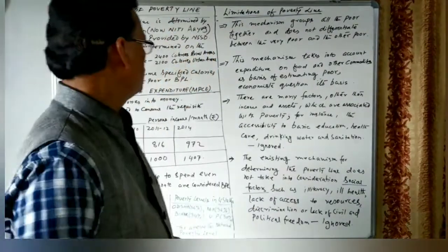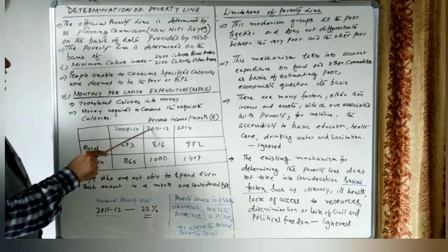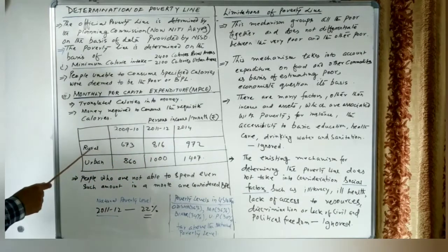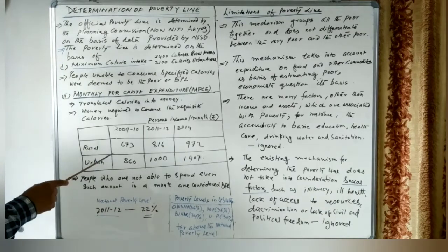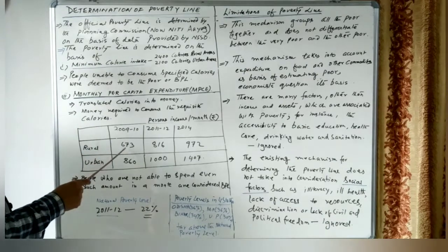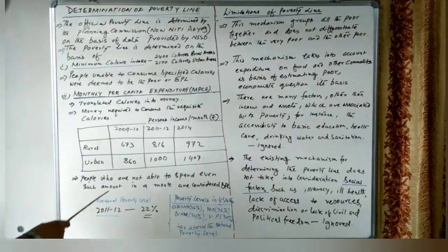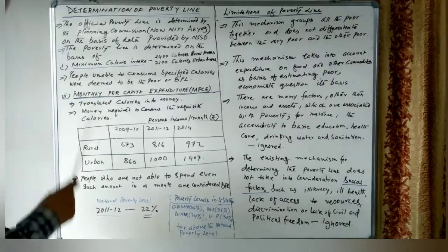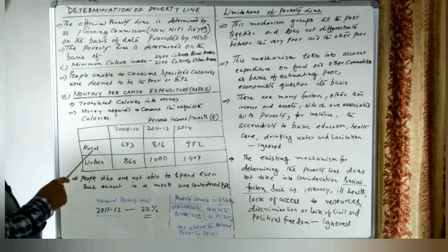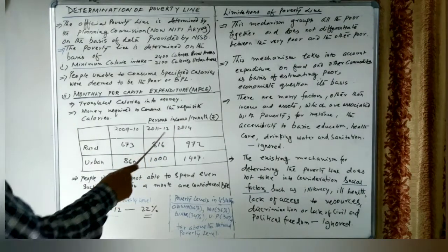Based on 2009-10 prices, a person living in a rural area should earn a minimum of 673 rupees per month, while a person in an urban area should earn a minimum of 860 rupees per month. At 2011-12 prices, 816 rupees per month is needed for a rural person, whereas 1000 rupees per month is needed for an urban person.